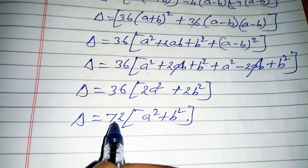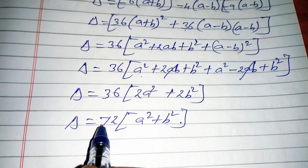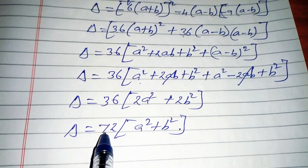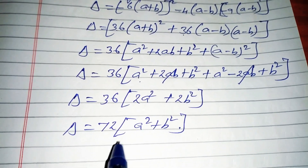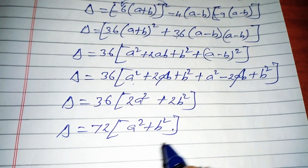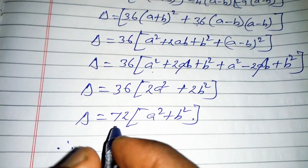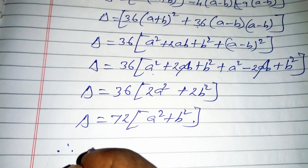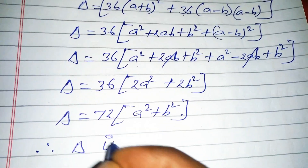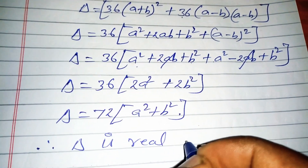Since delta equals 72(a squared plus b squared), this is always greater than zero because a and b are real numbers. Therefore, the roots are real and unequal. Don't forget to like, share, and subscribe.